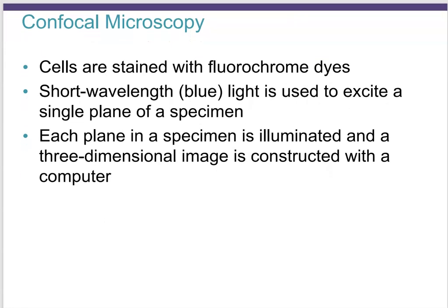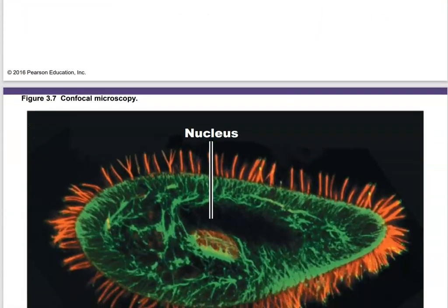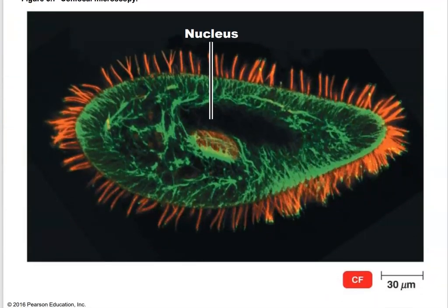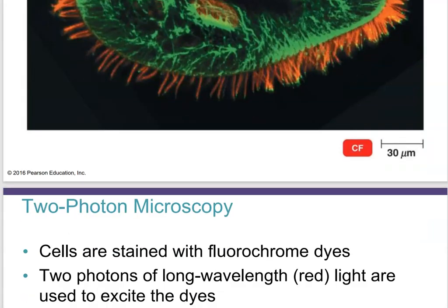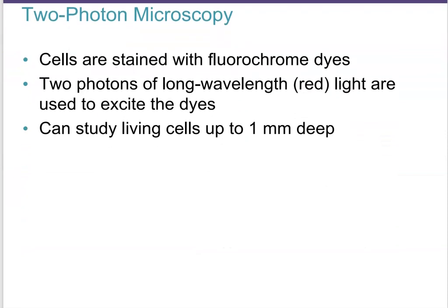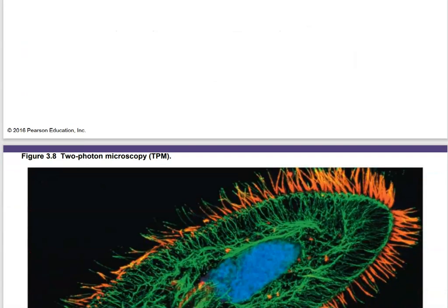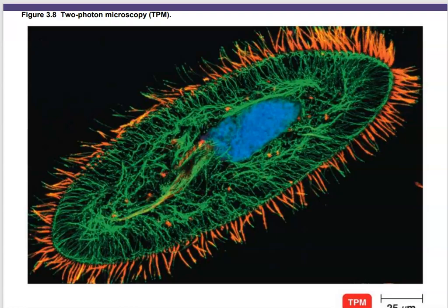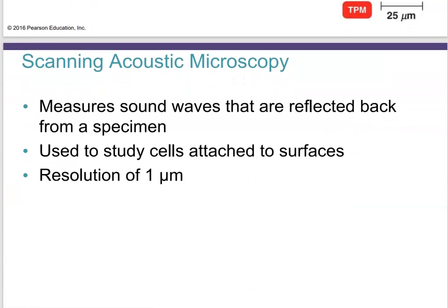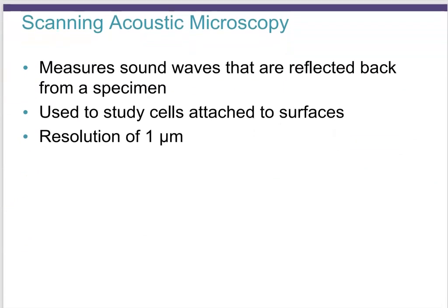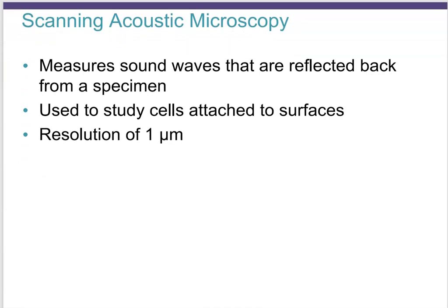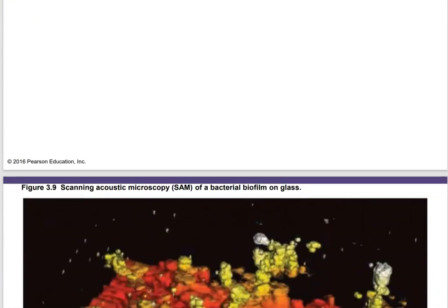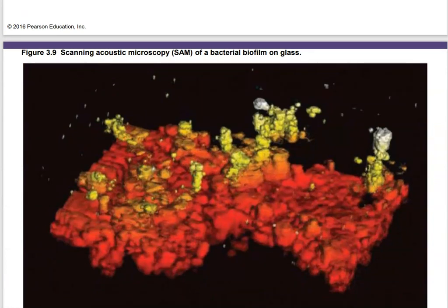Confocal microscopy combines fluorescence microscopy with a true 3D experience. You can use different chromophores — orange and green fluorescence, for example — to label different parts of the cell, like the cilia and the nucleus, in different colors, producing really nice images. Two-photon microscopy also uses fluorescent staining. Scanning acoustic microscopy measures sound waves reflected back from a specimen; it has lower resolution but gives a different kind of image.